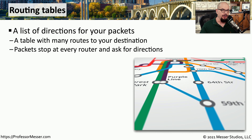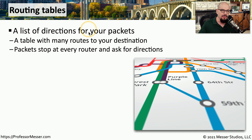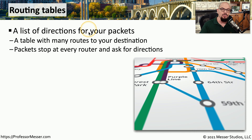When we send traffic across the internet, that packet is stopping at every router along the way and asking for directions. The directions on where that packet should go are contained within a routing table. Every router has a list of directions, and when a packet is inbound, the router evaluates the destination IP address and determines what the best route might be based on this predetermined list of routes. That packet then makes its way to the next router, which performs the same lookups to its routing table.